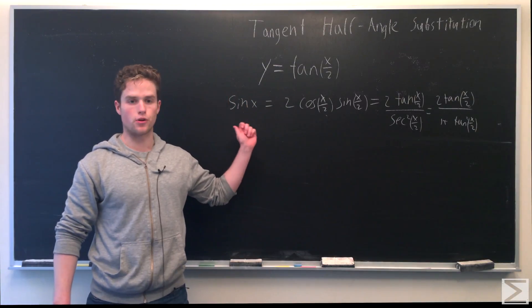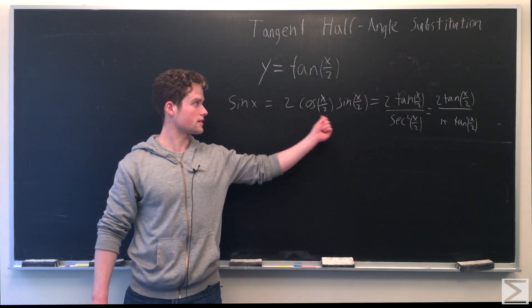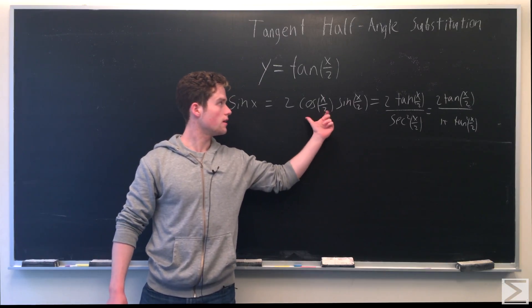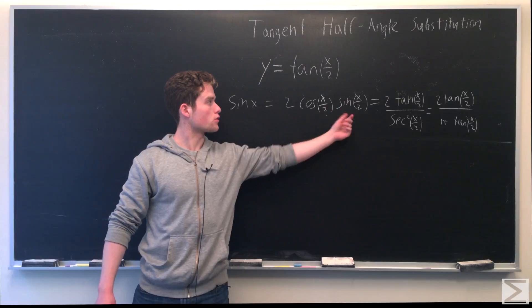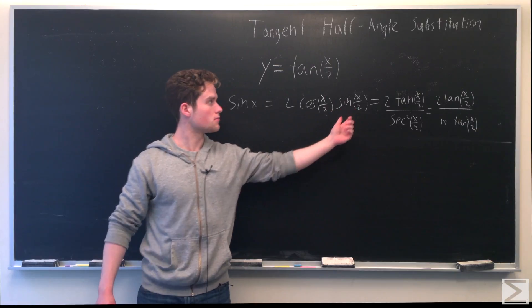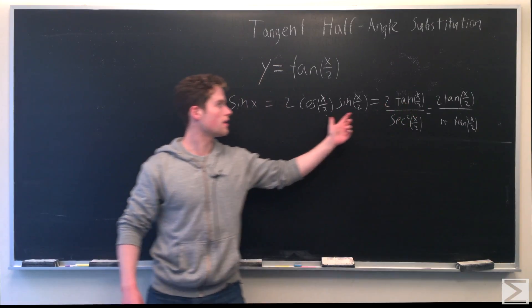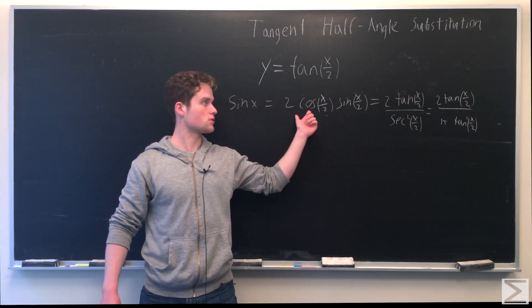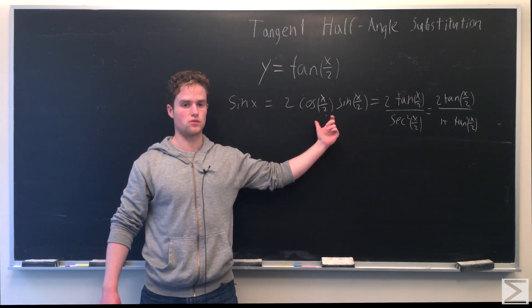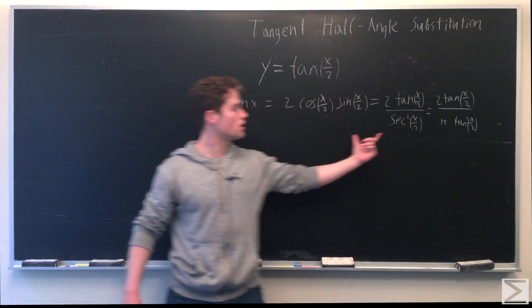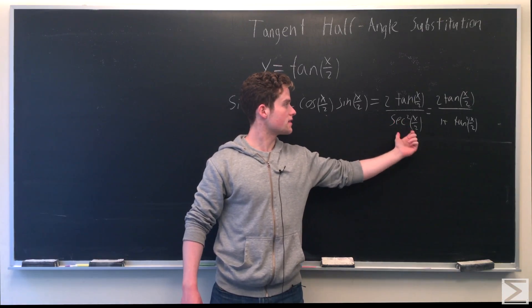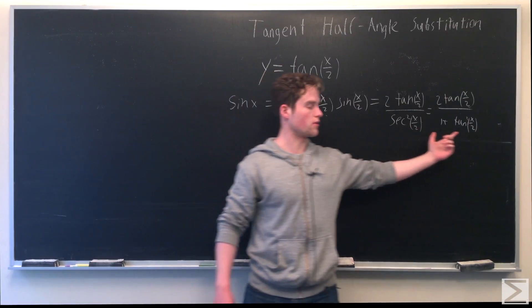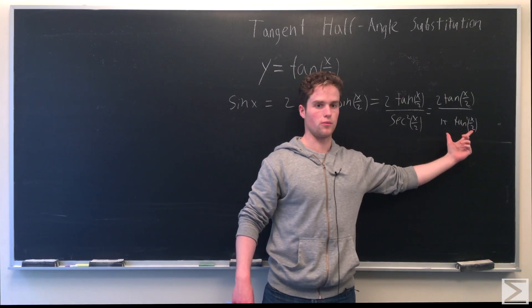First, for sine x: knowing that sine 2x equals 2 cosine x sine x, sine x is just 2 cosine(x/2) sine(x/2). Factoring out cosine(x/2) from sine(x/2), that's tan(x/2) times cosine²(x/2) times 2. Cosine²(x/2) is just 1 over secant²(x/2), and secant²(x/2) equals 1 plus tan²(x/2), giving us 2y over 1 plus y².